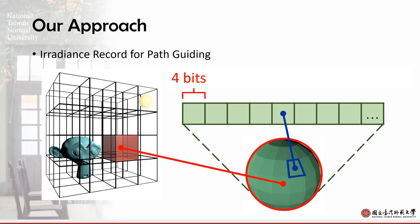We use rasterization to maximize the performance of the GPU. First, we divide the space evenly into voxels. Each voxel has a guiding cache that can be visualized as a sphere. We will update the weight of each area while learning.